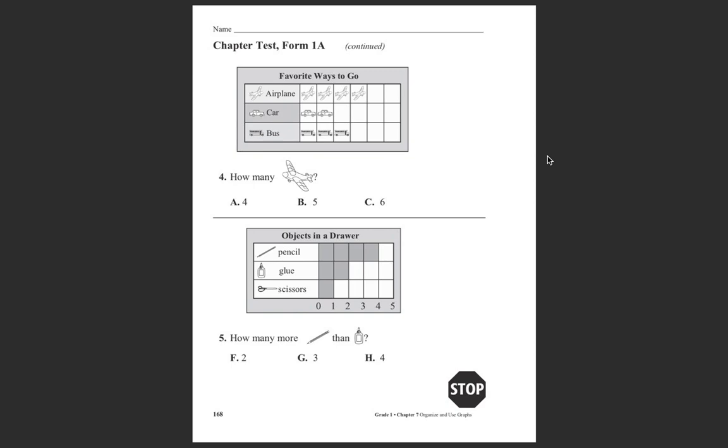Now let's go to the next one: favorite ways to go. This is a picture graph and we're looking at what is your favorite ways to travel: airplane, car, or bus. You're going to look at this chart, count these airplanes, and answer four, five, or six.